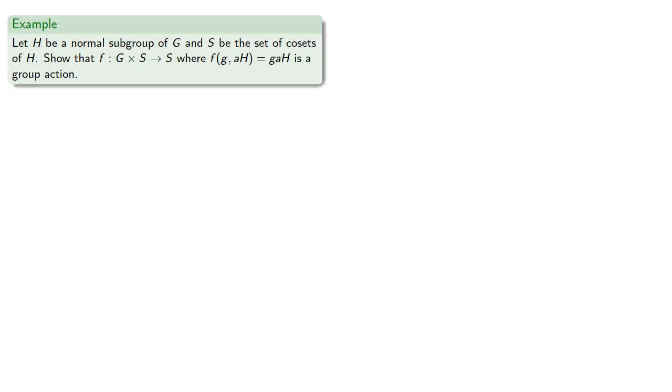For example, if H is a normal subgroup of G and S is our set of cosets of H, then F from the Cartesian product into S, where F of G of AH is GAH, is a group action.